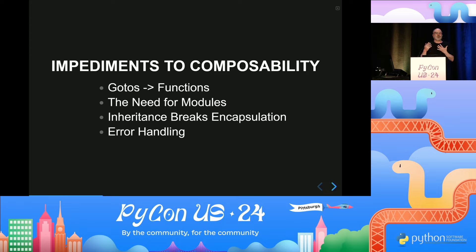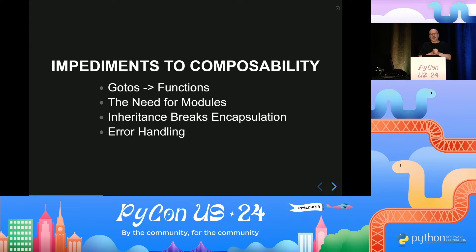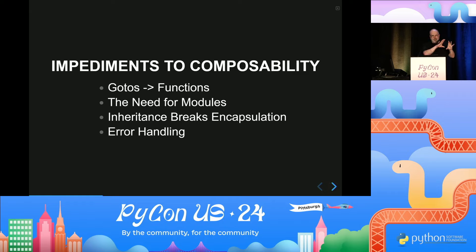Another issue was modules. If you have namespaces, a lot of the original languages had namespaces that were just polluting everywhere. There was even a programming language called Modula 2 whose focus was the introduction of modules. In Python, conveniently, the file is automatically a module, so it didn't need all the extra decoration that Modula 2 required. It's just: it's in a file, so it's a module, and the namespace is automatically there.